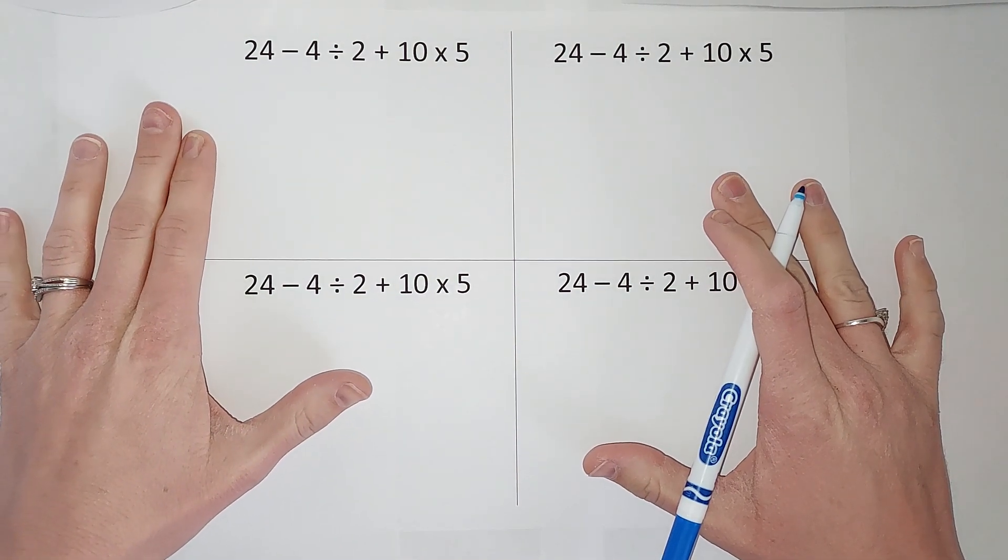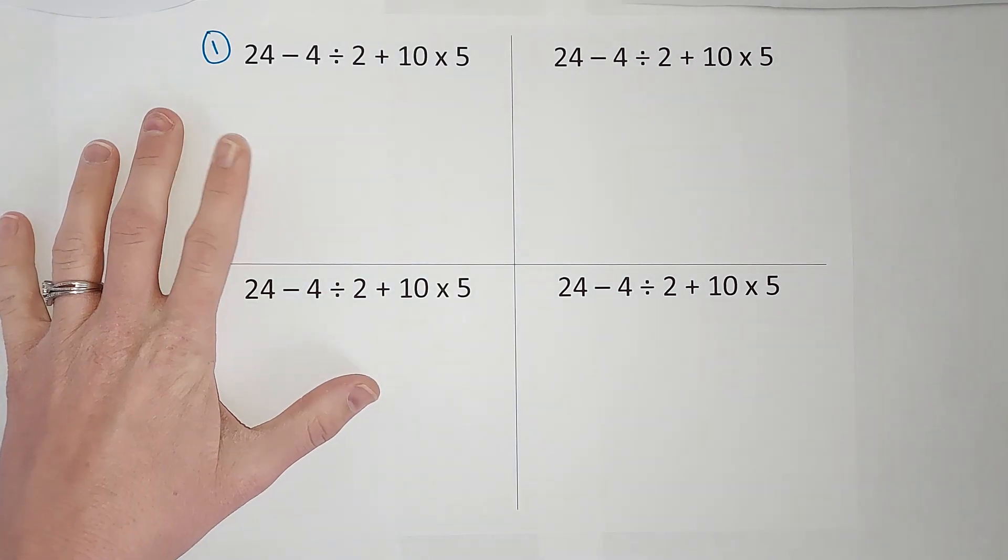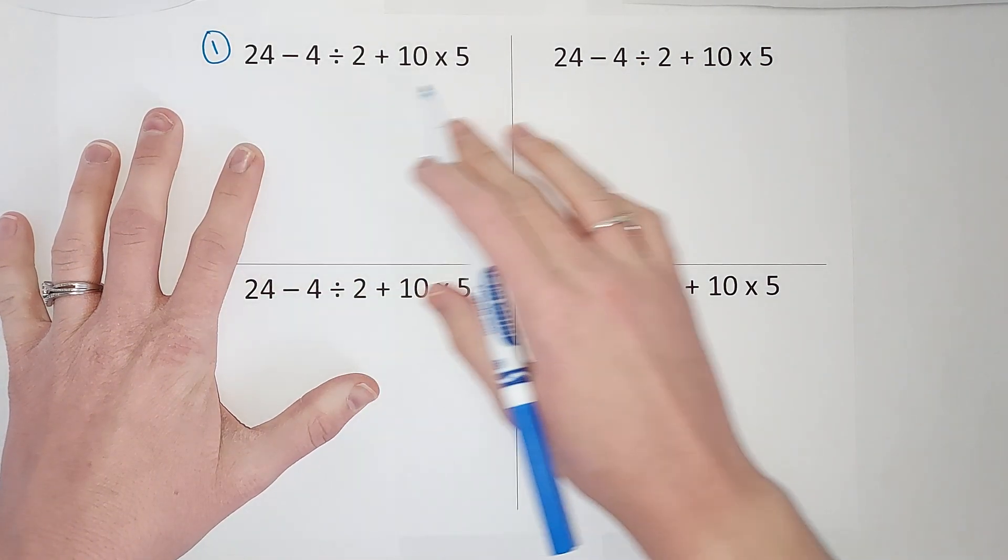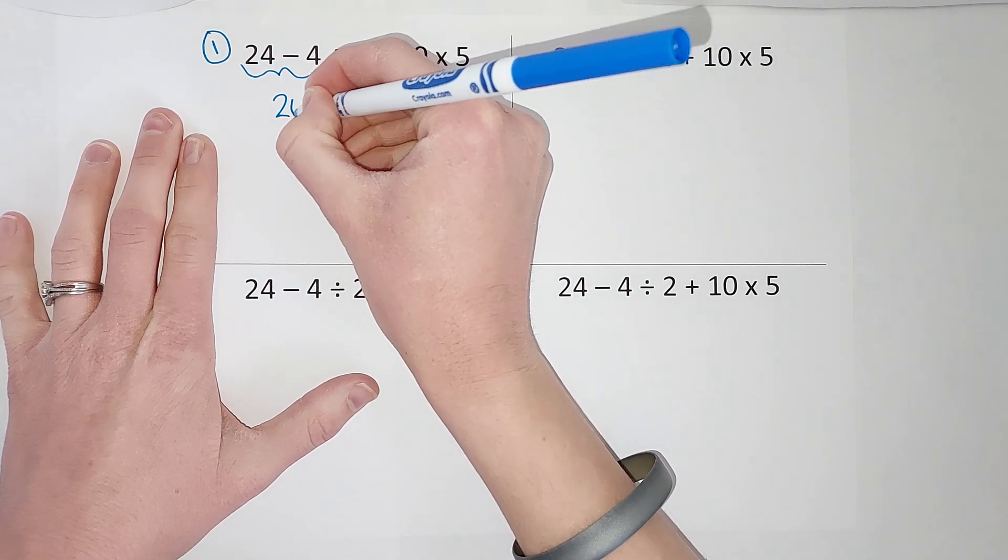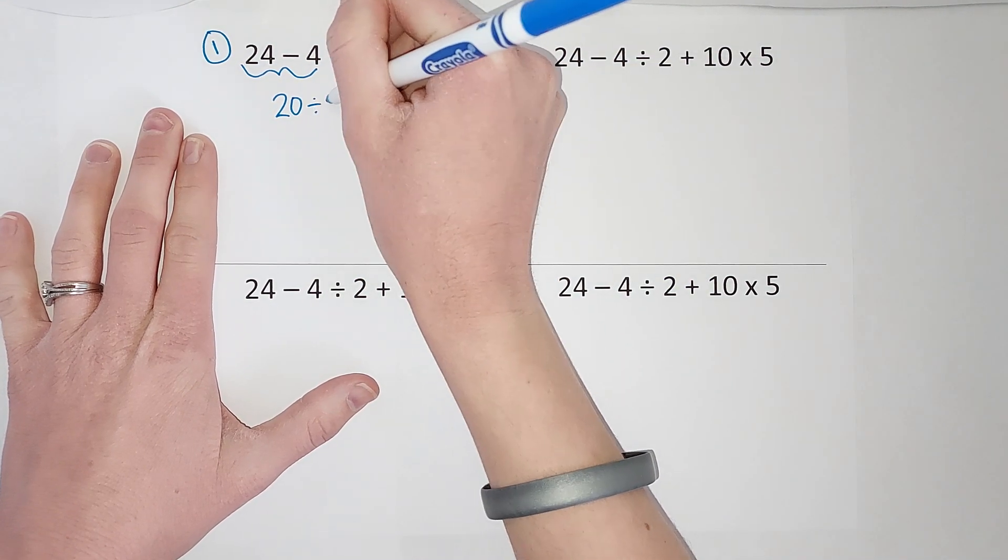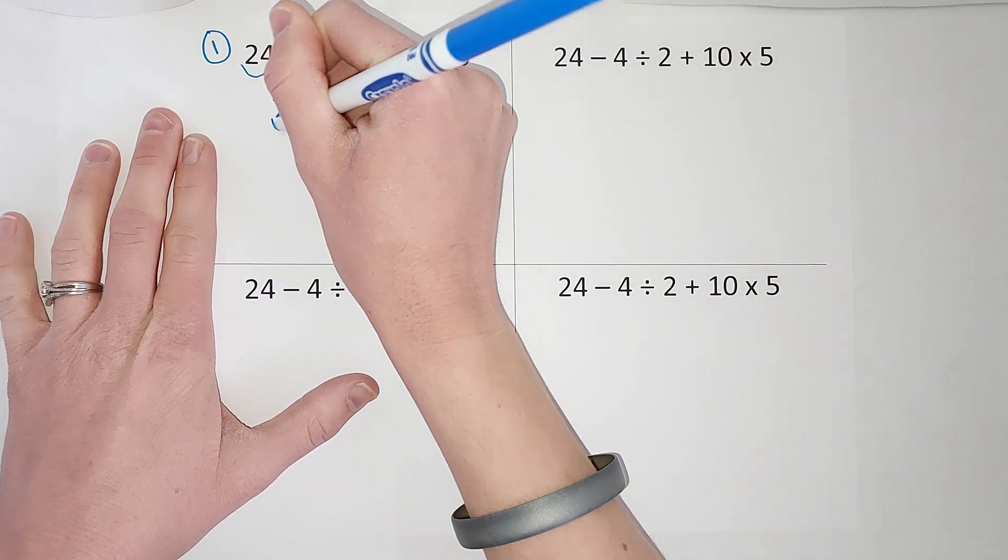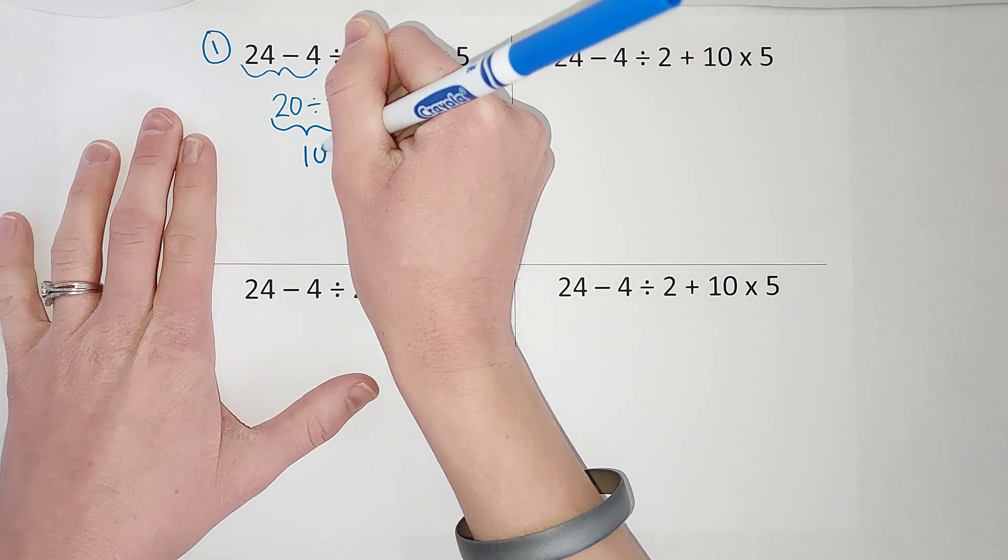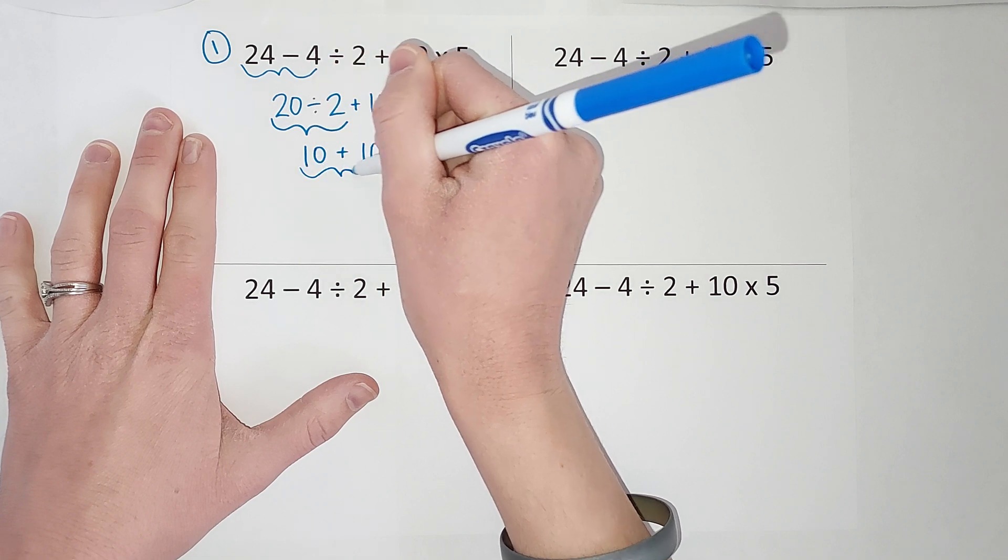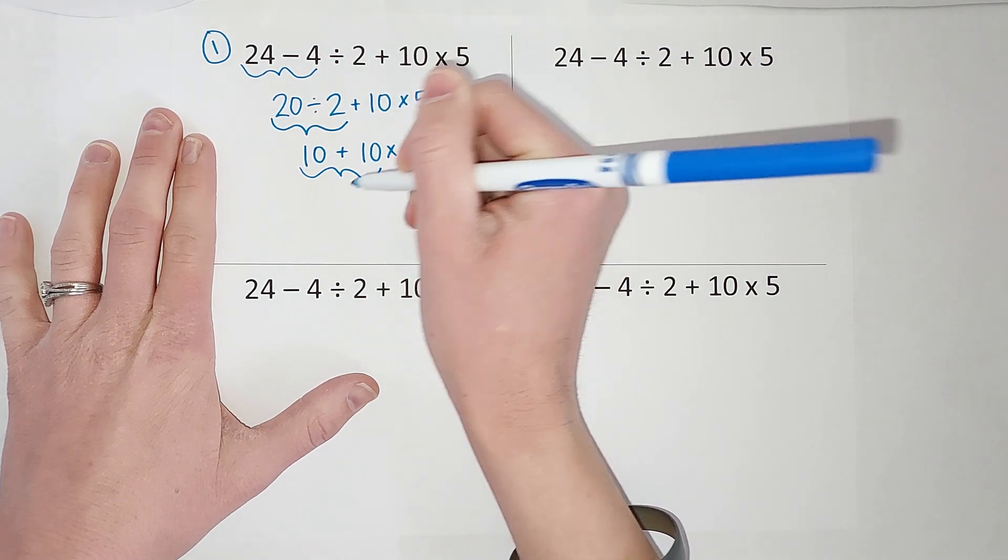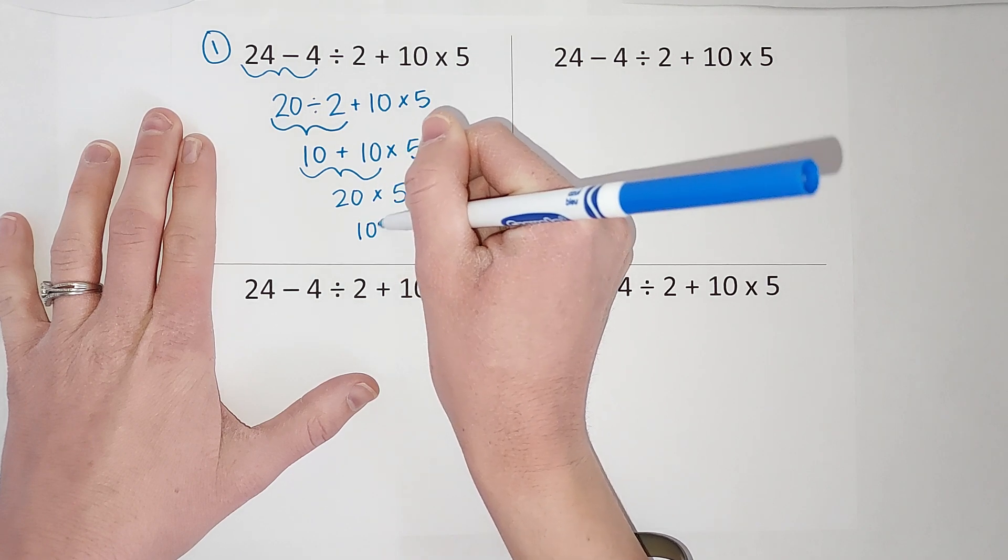The first kid says, well, I just did it like reading—I went from left to right. So he did 24 minus 4, got 20, and kept working his way down going left to right. He divided next, and then he added and got 20 times 5, which is 100.